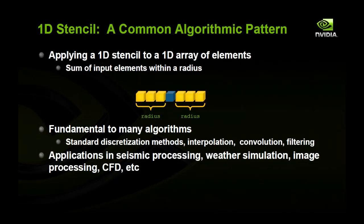Today, we're going to look at a common algorithmic pattern, which is the 1D stencil. In this case, we're going to be summing the input elements within a radius of a 1D array. So we're going to be summing three elements to the left and three elements to the right. And that will give us the value for the middle element. This type of pattern is fundamental to many algorithms that derive from standard discretization methods, interpolation, convolution, and filtering. It also has applications in seismic processing, weather simulation, image processing, and computational fluid dynamics.